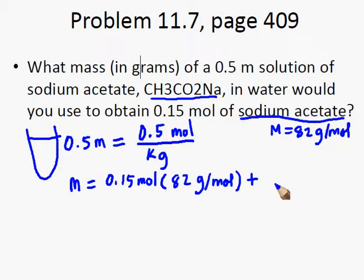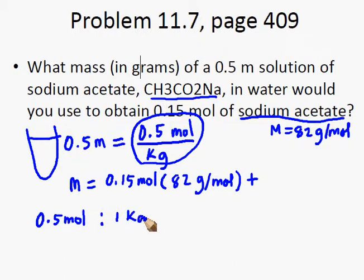Now, how do we solve for the mass of water present in 0.15 mol of sodium acetate? We calculate that using this expression, using the original concentration. This expression also means for every 0.5 mol of sodium acetate, there is 1 kilogram of water.